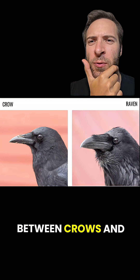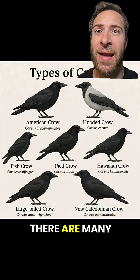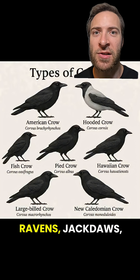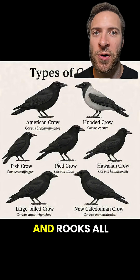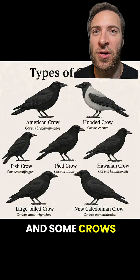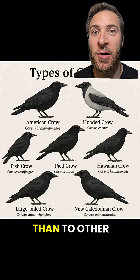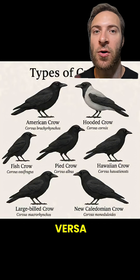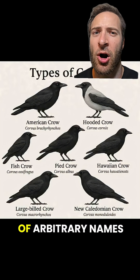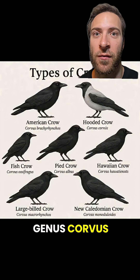What's the difference between crows and ravens? Well, first off, there are many species of crow and raven. Crows, ravens, jackdaws, and rooks all belong to the genus Corvus. And some crows are more closely related to ravens than to other crows, and even vice versa. So crow and raven are just kind of arbitrary names used for some members of the genus Corvus.